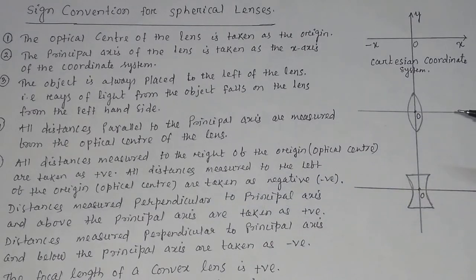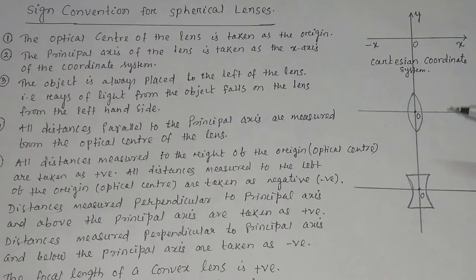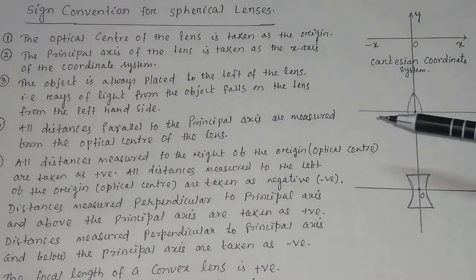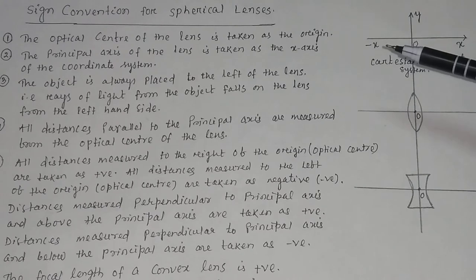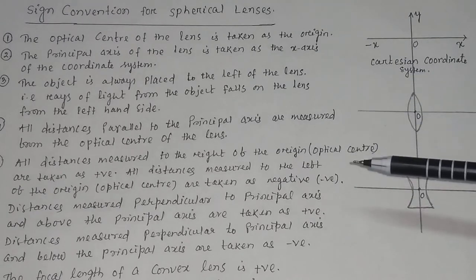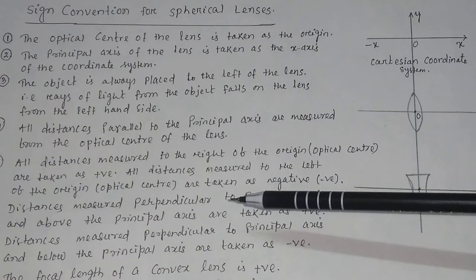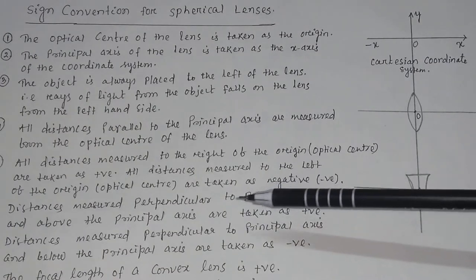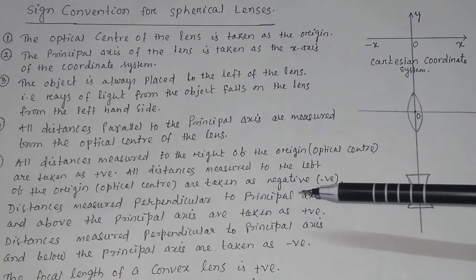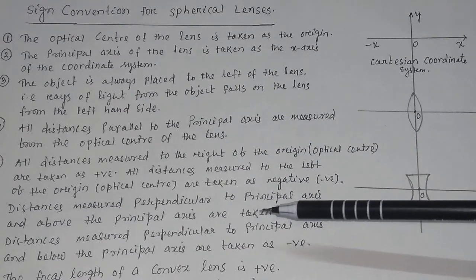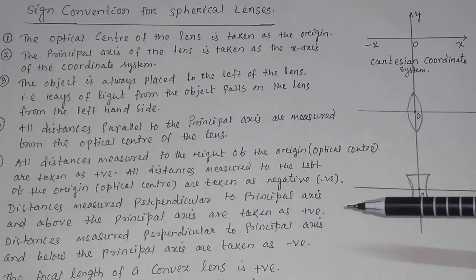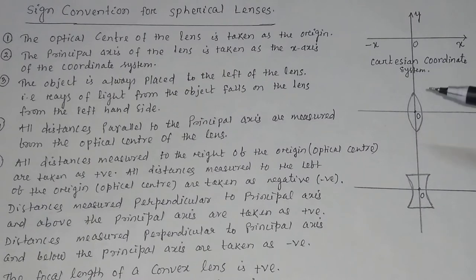This is the right of the optical center and this is the left of the optical center. The right of the optical center is taken as positive, as in the case of the Cartesian coordinate system. To the left of the optical center it is taken as negative, just as in the Cartesian coordinate system.